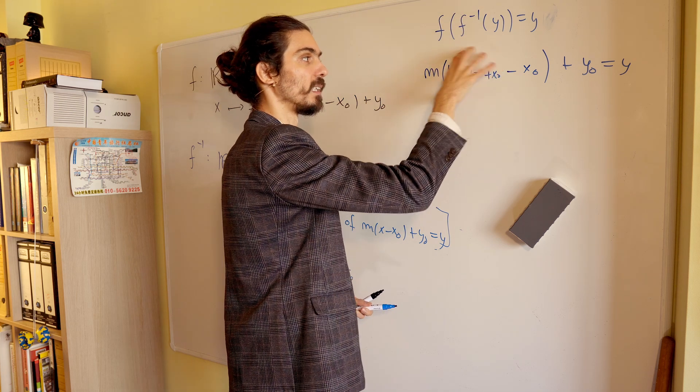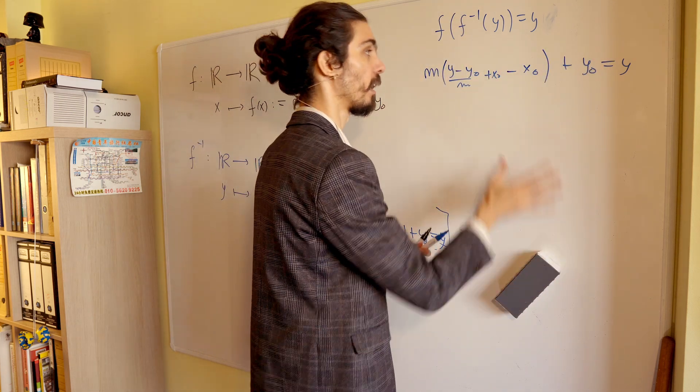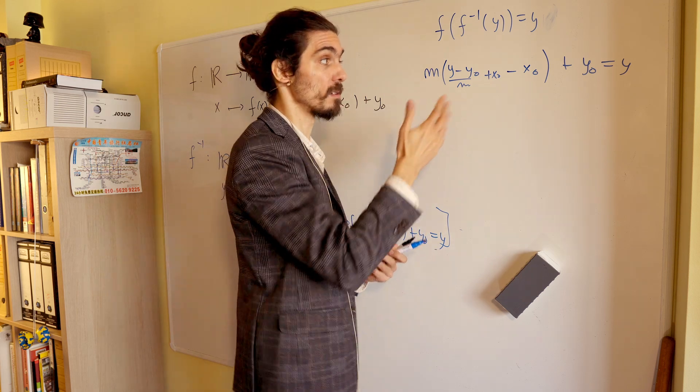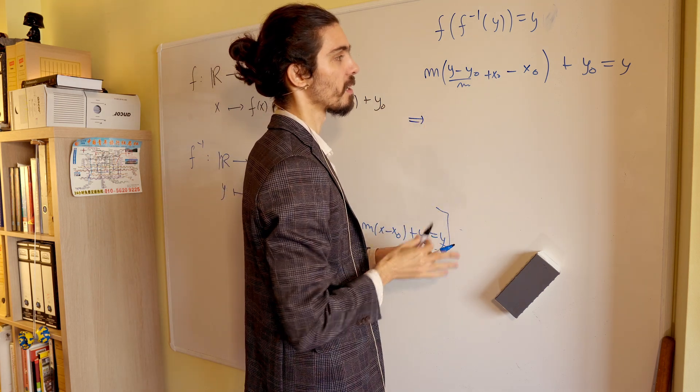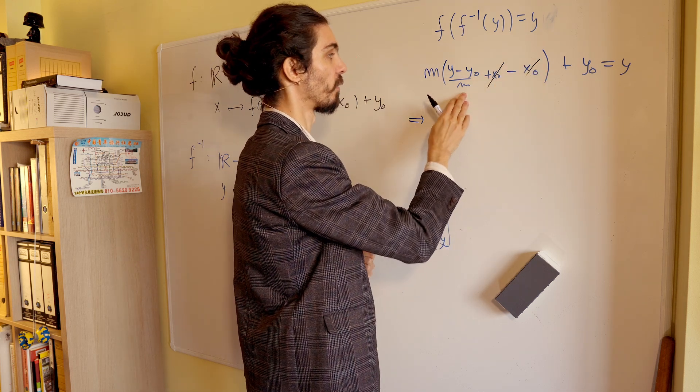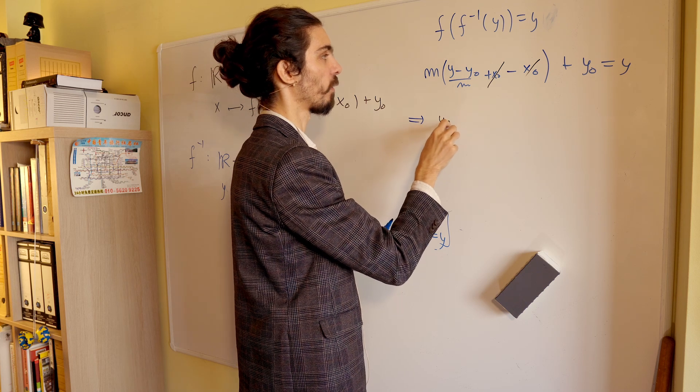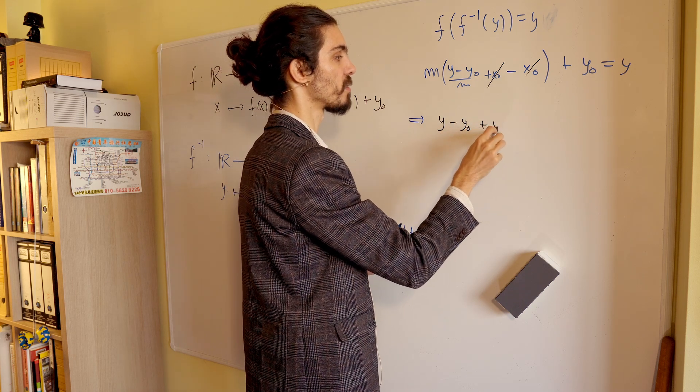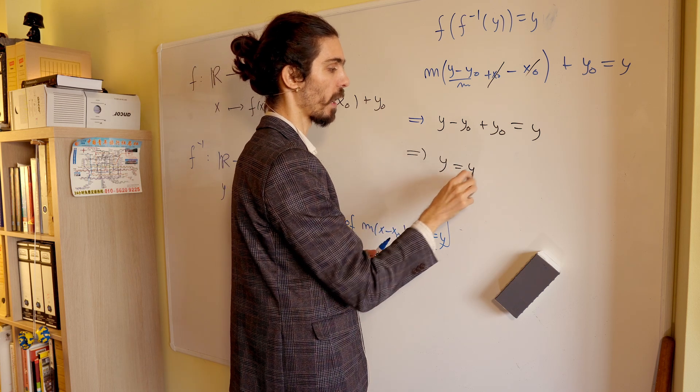This thing is equivalent to this thing, but is this thing true for every y? Let's see. Let's simplify it. It's too complicated just as is. So, let's simplify it. And you can immediately see some useful things. This goes away because it gives a 0. These m's cancel, so you get y minus y0 plus y0 is equal to y. Okay? Which in turn means y is equal to y.